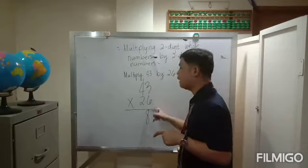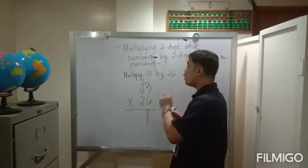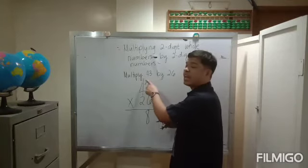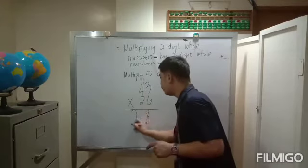That 18 is composed of two digits, so the one will be carried on the four, and the eight will be brought down here below the six. Next is six times four, which is 24. 24 plus the carried one equals 25, so 25 will be brought down here.